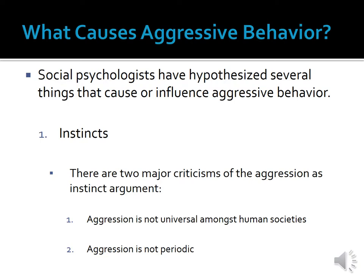Many social psychologists, however, don't agree that aggression is instinctual in humans. Although social psychologists have criticized this argument in a number of ways, two criticisms are particularly damning. One major problem with the aggression-as-instinct argument is that aggression is not universal amongst human societies. A defining characteristic of an instinct is that it can be found in all members of a particular species. For instance, most snake species have the instinct to hunt small vermin for food — all members of the species would have this instinct. Of course, humans have some instincts, such as the instinct to eat, and it is universal amongst all humans.